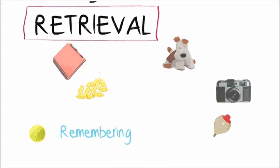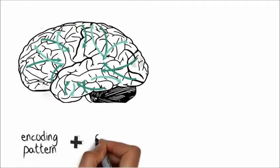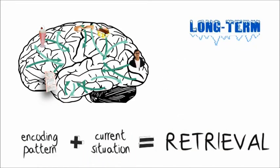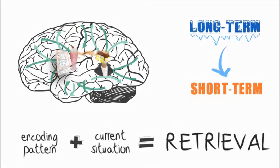During retrieval, the brain replaces the original pattern formed during encoding mixed with an awareness of the current situation, returning a memory from long-term storage to short-term memory, where it becomes labile and modifiable.